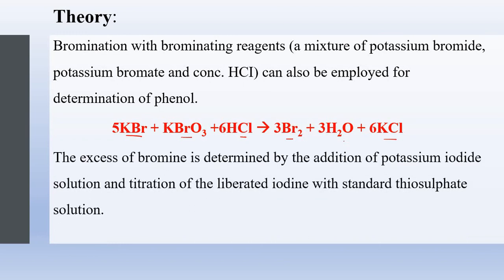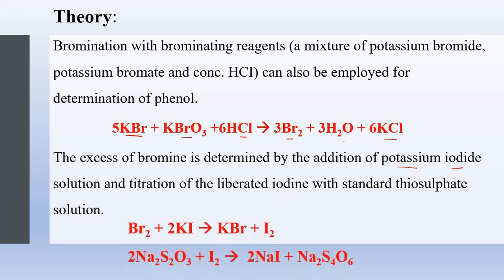The excess of bromine is determined by the addition of potassium iodide and titration of liberated iodine with sodium thiosulfate. The reaction: bromine reacts with potassium iodide to form KBr and I₂. In the second step, titration with sodium thiosulfate and iodine produces sodium iodide and sodium sulfite.